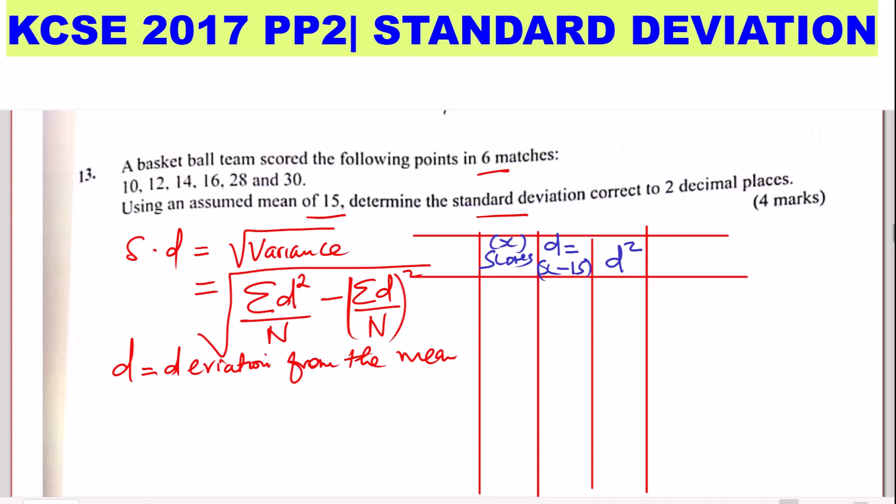So the scores are 10, 12, 14, 16, 28, and 30. So get the deviation from the mean. So X minus 15: 10 minus 15 you get minus 5, 12 minus 15 you get minus 3, 14 minus 15 you get negative 1, 16 minus 15 you get 1, 28 minus 15 you get 13, 30 minus 15 you get 15.